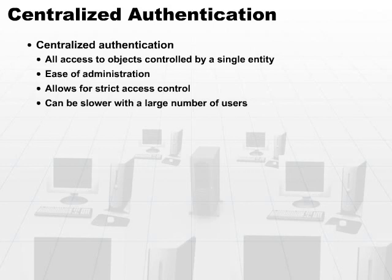And of course, looking at the third tenet of our CIA triad — recall confidentiality, integrity, and availability — there's a single point of failure when you have one entity controlling all authentication. If there is a failure in this authentication entity, then you'll have no access to the objects until that failure is resolved.